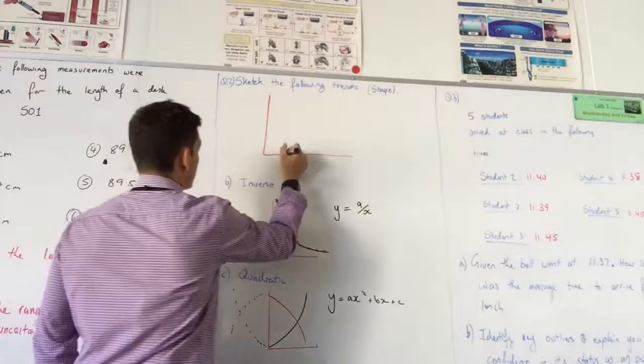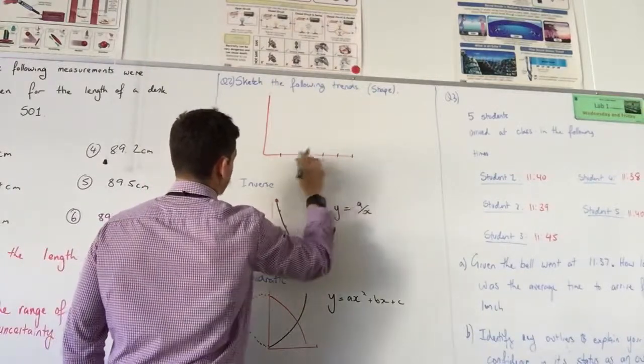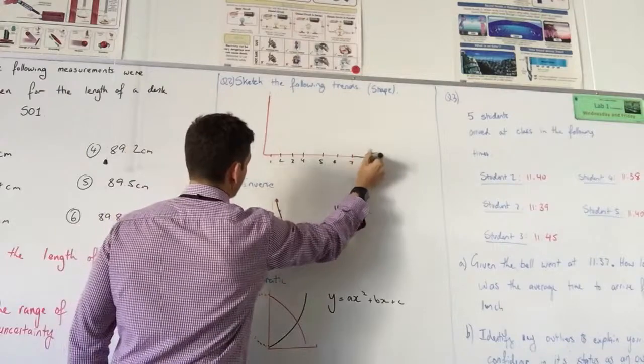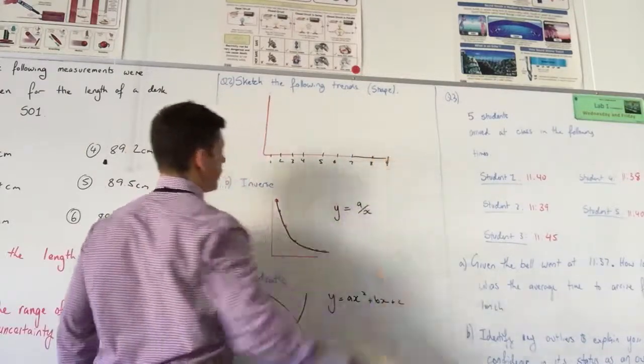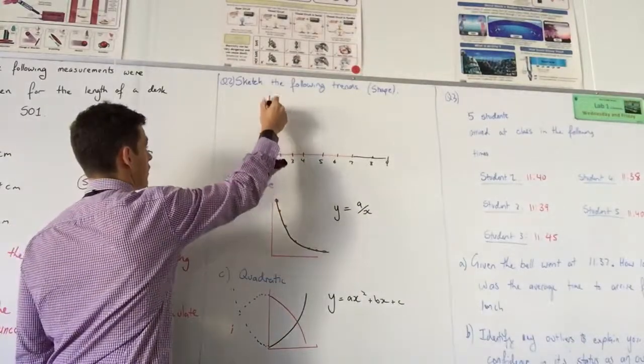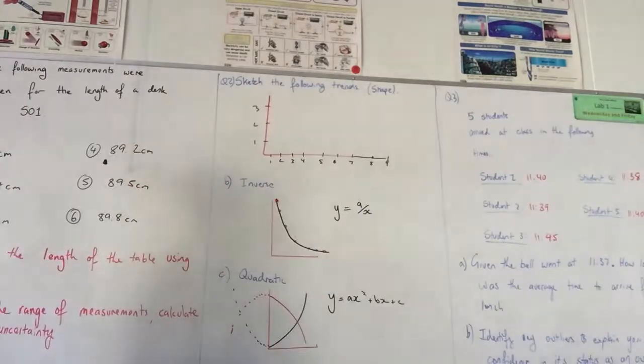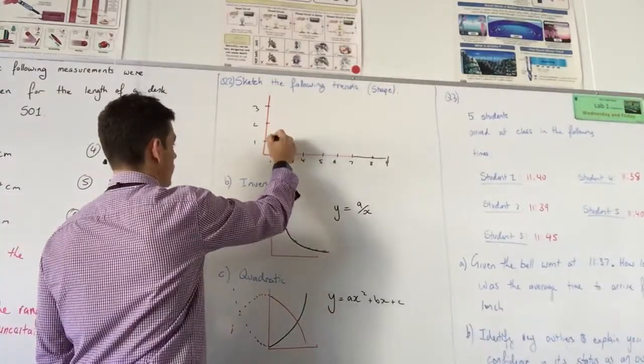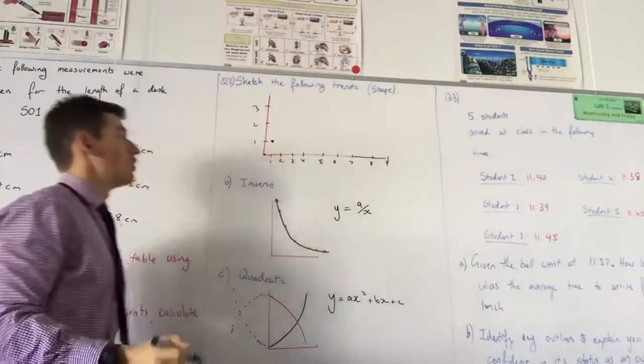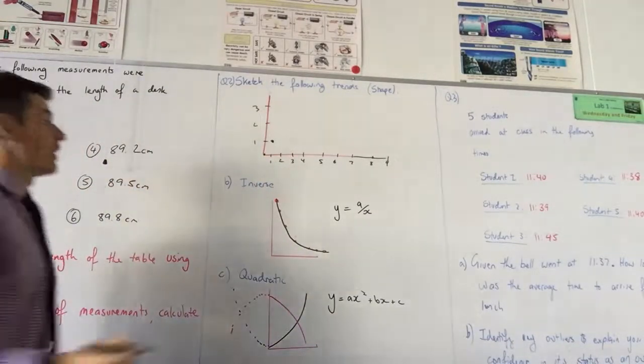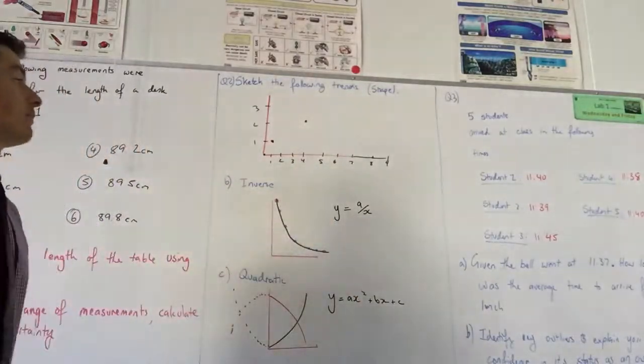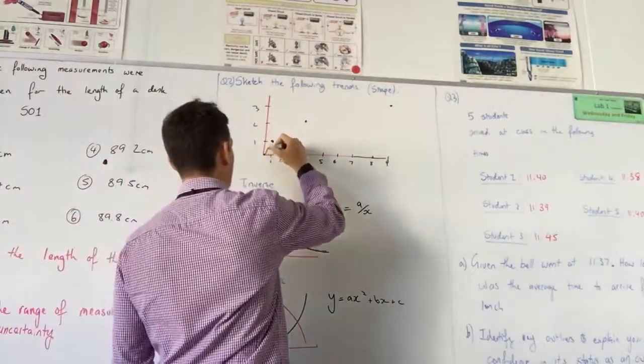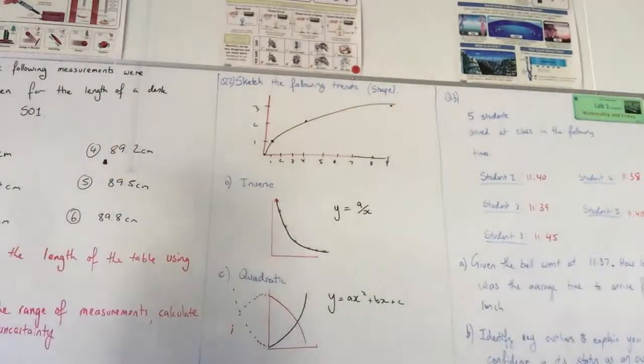Let x equal one, two, three, four. Actually, let's go a bit quicker than that. One, two, three, four, five, six, seven, eight, nine. What's the highest y value we're going to get? One, two, three. So when x equals one, what does y equal? One. Square root of one is one. When x equals zero, what does y equal? Zero. Okay, good. When will y equal two? Four. When x equals four? When will y equal three? Nine. So that's going to look something like that. Square root looks like that.